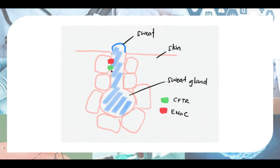So the normal function of your CFTR protein is to absorb chloride ions, and the normal function of your ENAC is to absorb sodium ions.